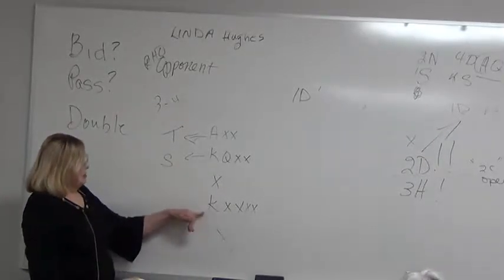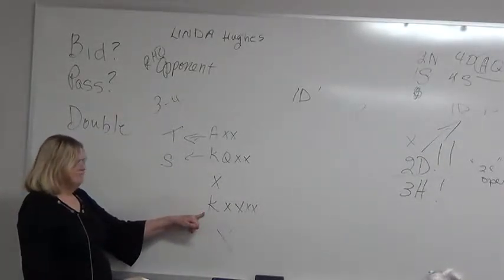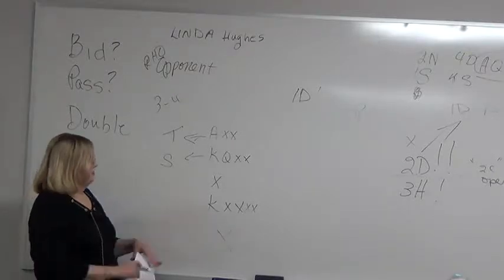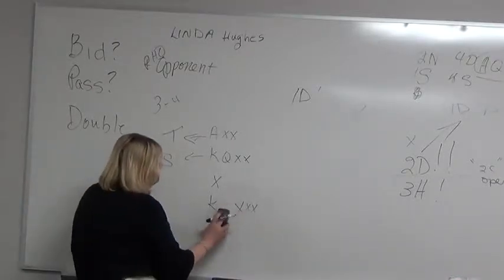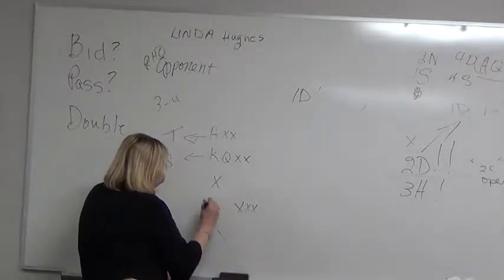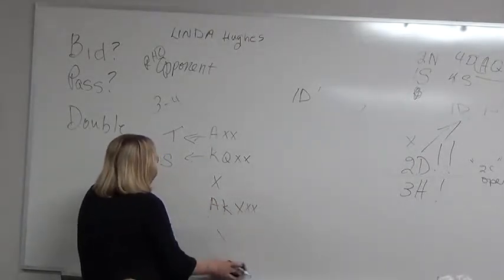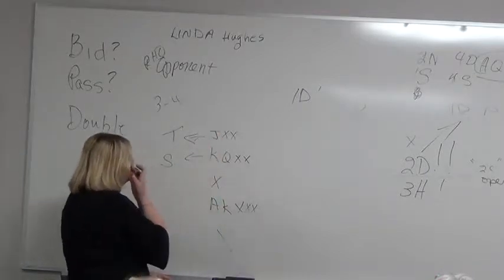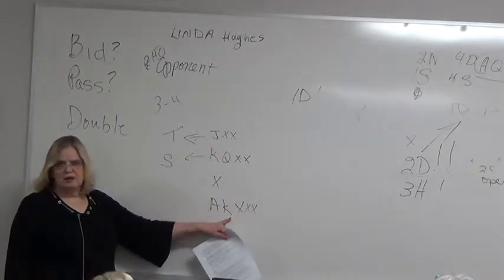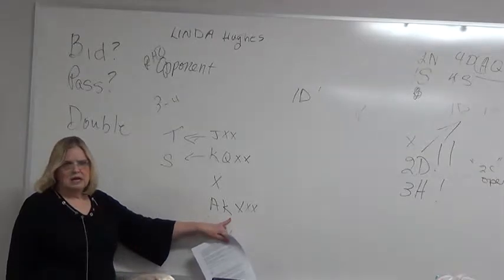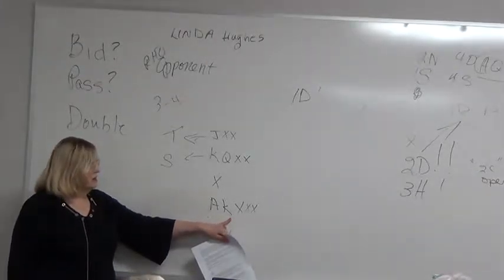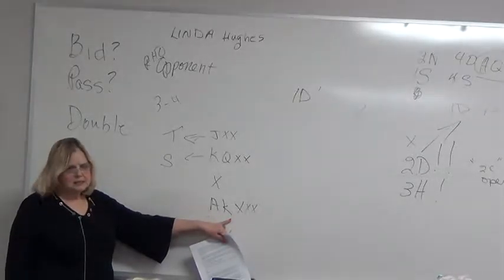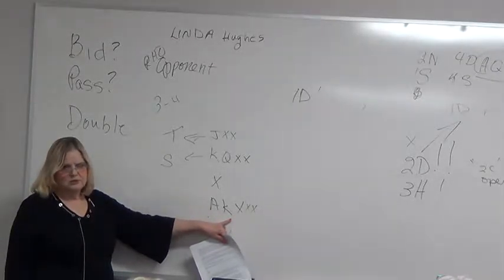So what are your choices? You can bid two clubs. I don't like that. Put an ace here and take this ace away. Maybe give me a jack. Now I might bid two clubs. I think that it shows my hand. Yes, I do risk losing the heart suit.